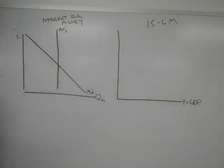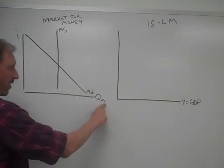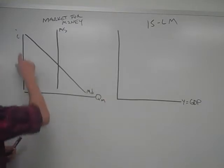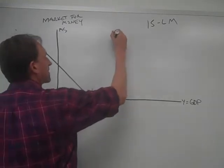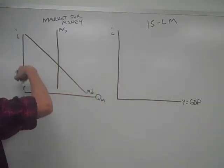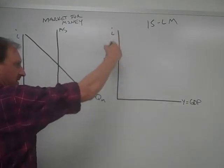We're just looking at the LM for this module. The market for money, we have interest rates here, and we have the quantity of money here. And we should note that interest rates also carry across to here. So this axis informs this axis.